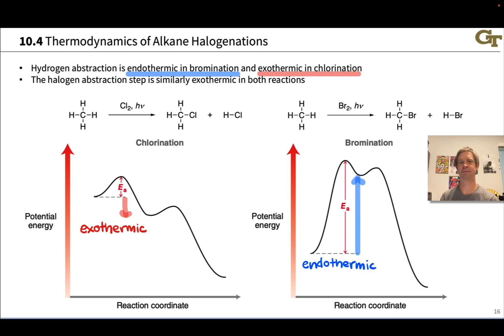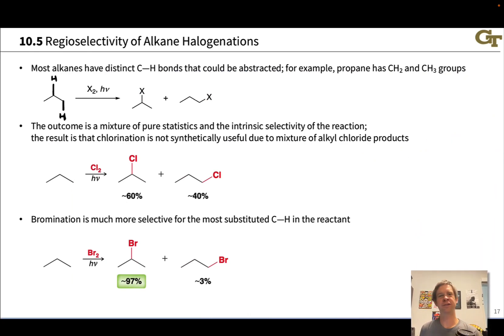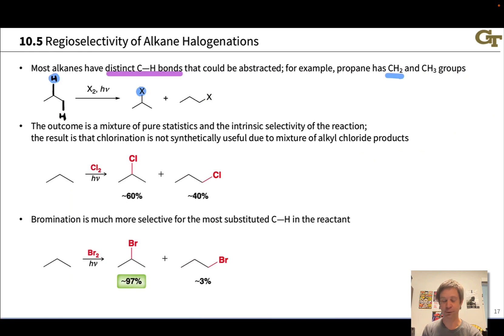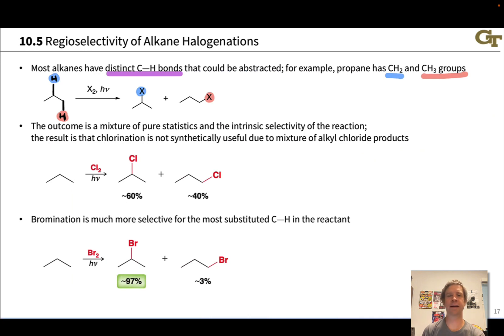Alkanes bigger than methane have distinct C-H bonds that could be abstracted to produce different carbon radicals and different alkyl halide products. For example, propane — the three-carbon propane — has a secondary carbon and a primary carbon that could lead to a secondary alkyl halide or a primary alkyl halide. Abstraction at the secondary position leads to 2-halopropane, and abstraction at the primary position leads to 1-halopropane. So we have a regiochemical issue — an issue of site selectivity.